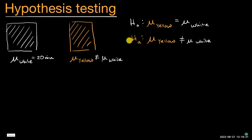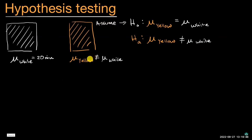Once the hypotheses are set, we assume the null hypothesis, build the yellow site, and take a sample. We then ask: what is the probability of getting that sample mean assuming the null hypothesis? If that probability is really low, we reject the null hypothesis, which suggests the alternative. On the other hand, if the sample mean seems reasonably likely under the null hypothesis, we fail to reject the null, and that would not suggest the alternative.